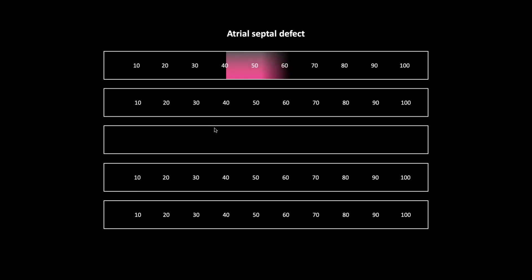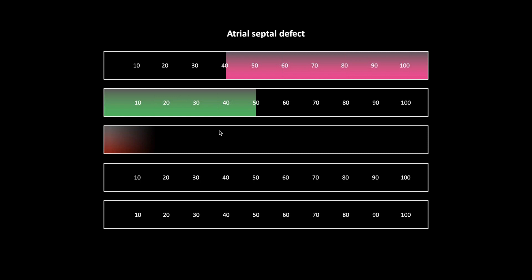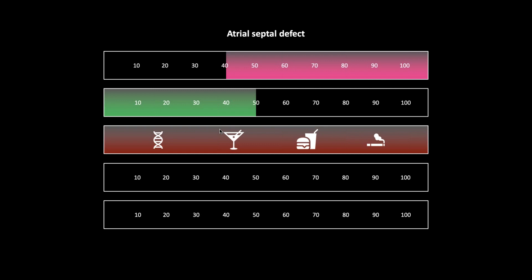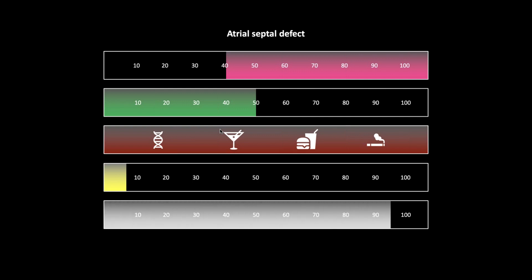The next case is an atrial septal defect. These are most common in women over 40, with an annual incidence of 50 per hundred thousand — quite common. Risk factors are not very firm; associations include maternal heredity, alcohol, gestational diabetes, or smoking during pregnancy, but all are weak and unsatisfying for predicting in whom these will arise. Lethality is about seven percent, usually due to the complication we'll be demonstrating.